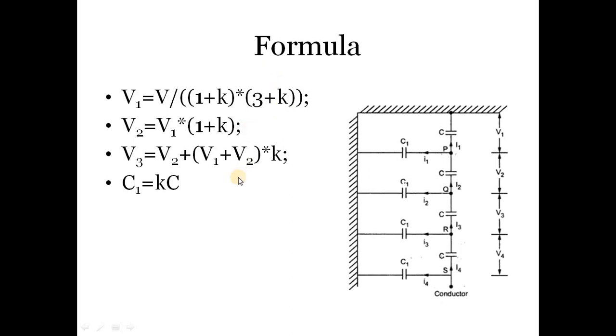I have given this formula directly; otherwise these formulas will be derived with some mathematical relations. So V2 will be equal to V1 upon 1 plus K, and V3 will be equal to V2 plus V1 plus V2 multiplied by K, where K is C1 upon C. C1 is the shunt capacitance and C is the mutual capacitance. In other words, we can say that this C1 shunt capacitance is K times the mutual capacitance.